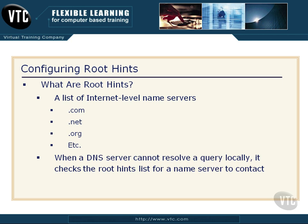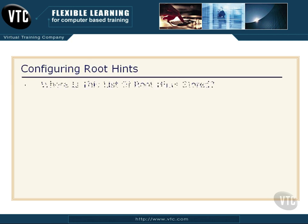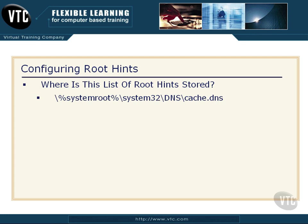Where are these Root Hints that the server is going to refer to? They're stored on your domain controller, or wherever you have DNS installed. On a Windows domain controller, it's going to be in the system root, in the system32 folder, then the DNS folder, and then there's a file called cache.dns.